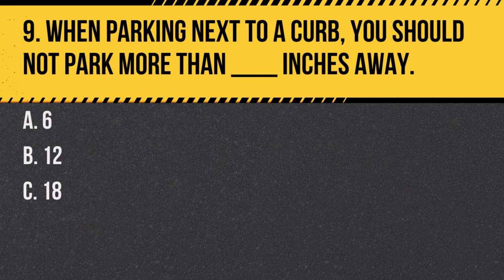Question 9. When parking next to a curb, you should not park more than how many inches away? a. 6. b. 12. c. 18. Answer: c. 18 inches. More than 18 inches away from the curb is too far and could obstruct traffic.